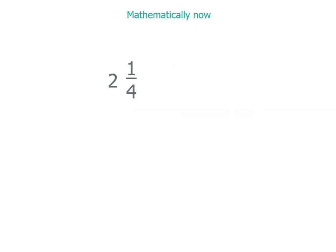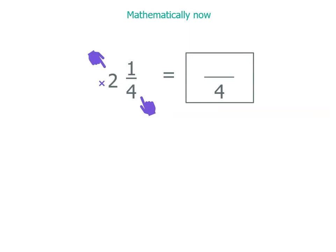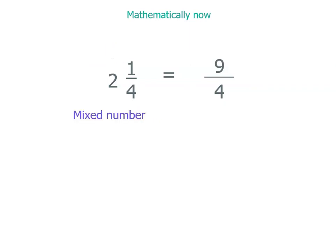Let's do it mathematically now, without the number line. What we do is take our denominator — in this case it's 4 — and write that there. Then we multiply that by the whole number, because that tells us how many quarters are in 2. 2 times 4 is 8. Plus we've got the 1 quarter, so 8 quarters plus another 1 quarter is 9 quarters. There's our mixed number, and there it is expressed as an improper fraction.